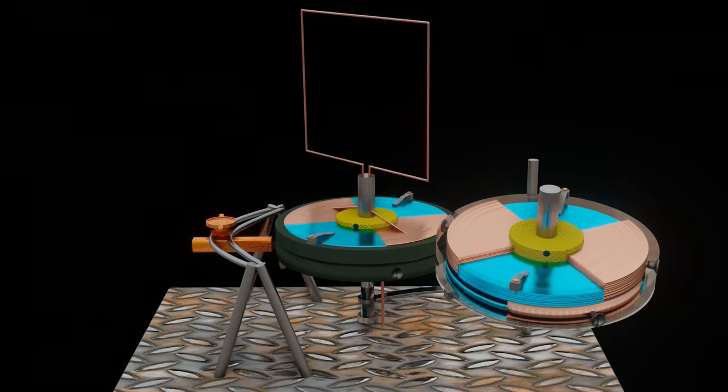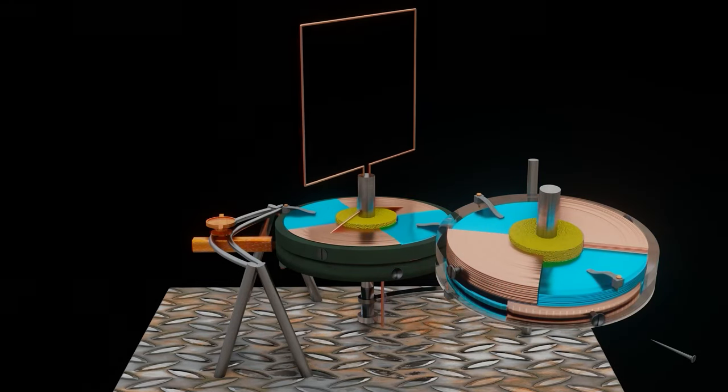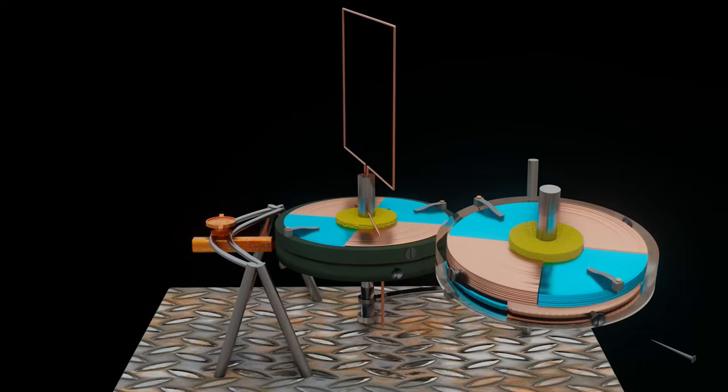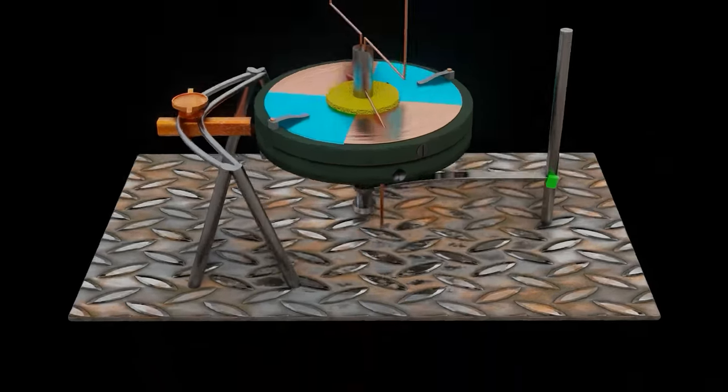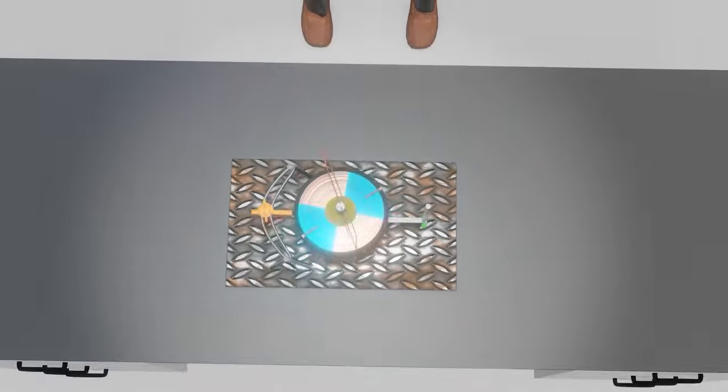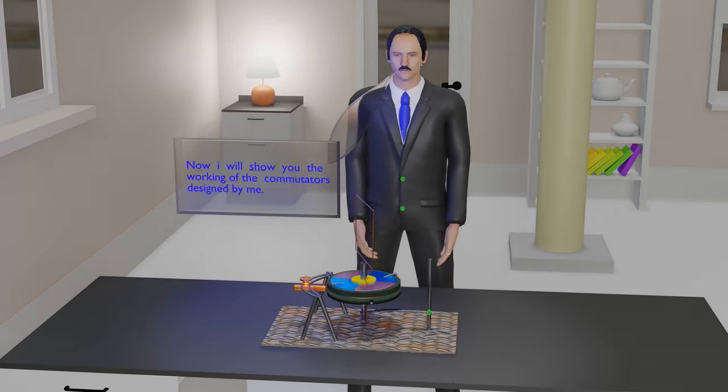The metal segment of the commutators may be moved forward by loosening the screws by which it is fixed to the shaft. Now, we will see the working of the commutator designed by Nikola Tesla.